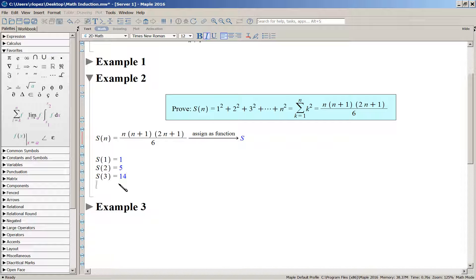Okay, so how do you proceed from the K statement to the K plus first statement? Well, what is the Kth statement? S of K. What does that look like? Okay, it's K times K plus one, times two K plus one, all over six.